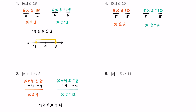Our original inequality had a less than or equal to symbol, so we can combine this: negative 2 is less than or equal to x, which is less than or equal to positive 2. x can be any value between negative 2 and positive 2, including those endpoints. On the number line, 2 is to the right and negative 2 is to the left. These values are included in the solution, so we put filled-in circles on negative 2 and positive 2, and shade anything in between.